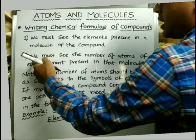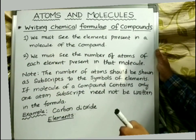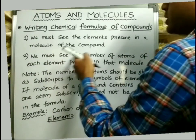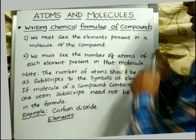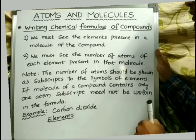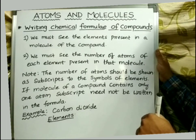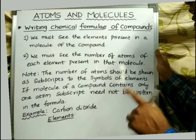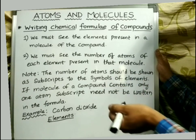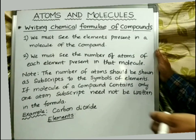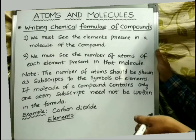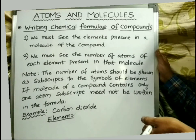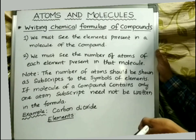The second point we should remember is we must see the number of atoms of each element present in that molecule. That means the molecule of a compound contains different elements in different numbers, so the number of atoms of different elements should be observed for the given compound.